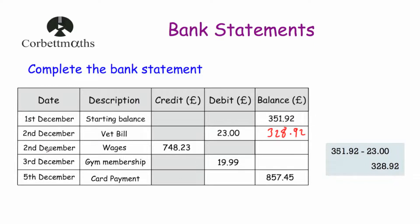Also on the 2nd of December there are wages — money paid into the bank account — for £748.23. That's a credit, so we add it on to our £328.92. Adding £748.23 gives us £1,077.15, which is the new balance.